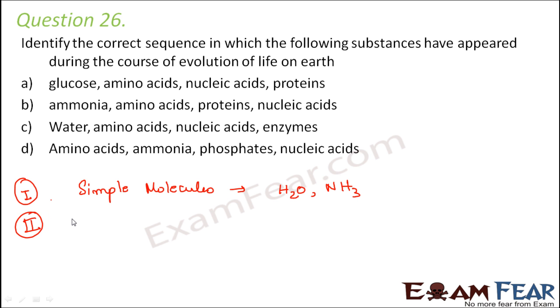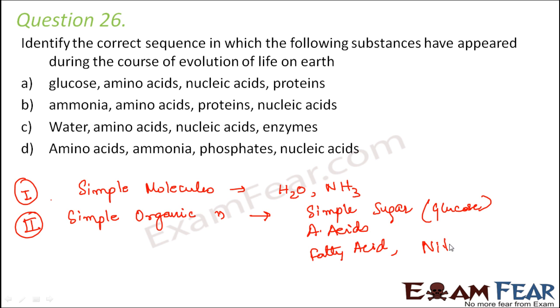The next phase was formation of simple organic molecules. Organic means anything that contains carbon. So simple organic molecules like simple sugars would include something like glucose, amino acids, fatty acids, nitrogenous bases like purines, pyrimidines. All of these were part of the second phase where simple organic molecules were formed.